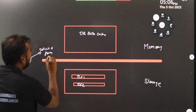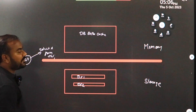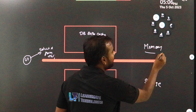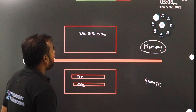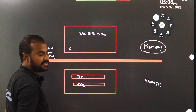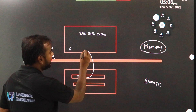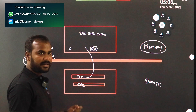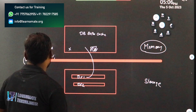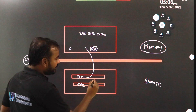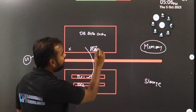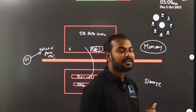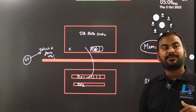Whenever you run this query, first of all it will try to check the data inside the database buffer cache, because it is a part of your memory. If the data is not available inside the database buffer cache, then it is going to read the data from your data files into the database buffer cache. The block which contains your data is now available here — this is your frequently used data.